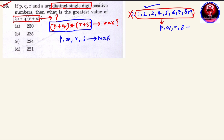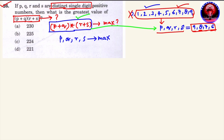इसलिए P, Q, R और S की values 9, 8, 7 और 6 ही रख सकते हैं। इन 4 numbers में अगर किसी भी number की value 9 हो गई, तब बचे हुए 3 numbers में किसी की भी value 9 नहीं हो सकती — उनको next maximum number देखना होगा जो कि 8 बचेगी। इस algebraic expression में P, Q, R, S की values put करने के combinations different हो सकते हैं, तो देखते हैं कौन-कौन से combinations बन सकते हैं।